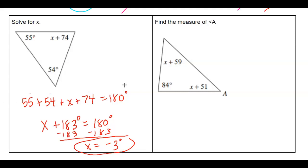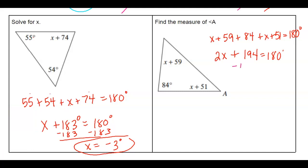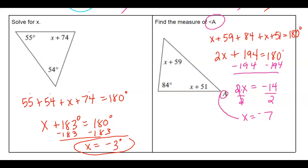On the last algebraic example, all three angles add up to 180. Combining like terms, x plus x gives 2x, and 59 plus 84 plus 51 gives 194. So 2x plus 194 equals 180 — subtracting 194 gives 2x equals negative 14, then dividing by 2 gives x equals negative 7. Since we want the measure of angle A, we substitute: negative 7 plus 51 equals 44 degrees.